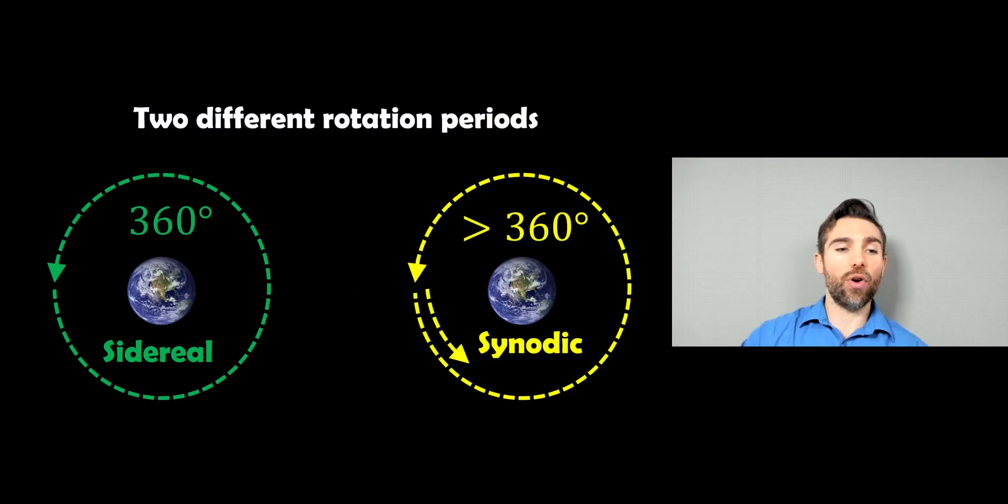So before we do that, we need to have a look at two rotation periods of the Earth. So the first one is the sidereal period. That's essentially one full rotation in 360 degrees. And the synodic period, or the solar day. And that is more than a full rotation. They're not the same. And it's going to relate to why the winter solstice is longer than the summer solstice in a rotation period.